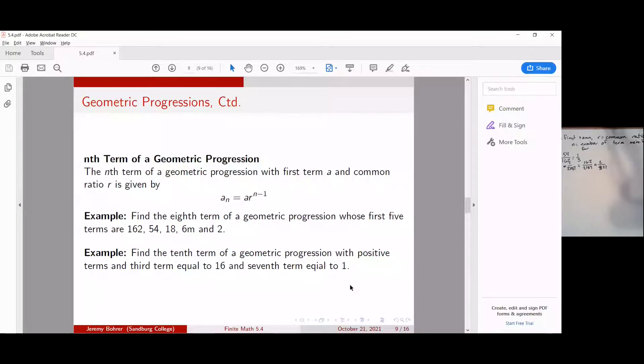In our next problem, we're asked to find the 10th term of a geometric progression with positive terms where the third term equals 16 and the seventh term equals one.